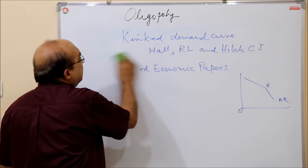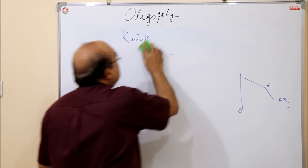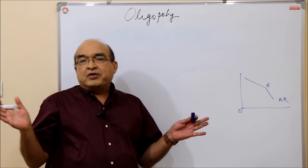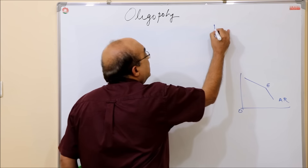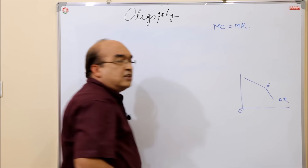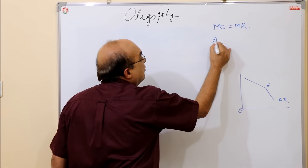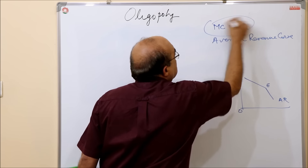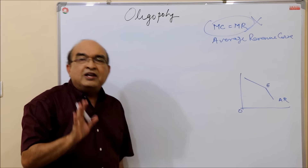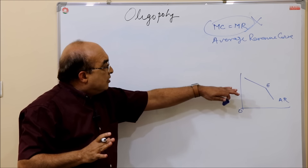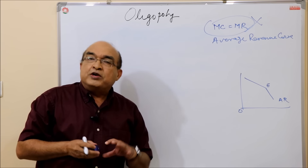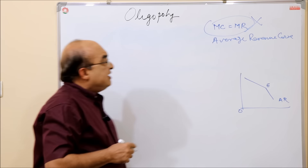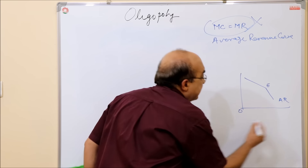It is interesting to note that this analysis is not based on the popular principle of the equality of marginal cost and marginal revenue. Here the output level is determined on the basis of the average revenue curve. This is the only kind of analysis where the marginal cost and marginal revenue equality principle is not followed — that is one significant point.